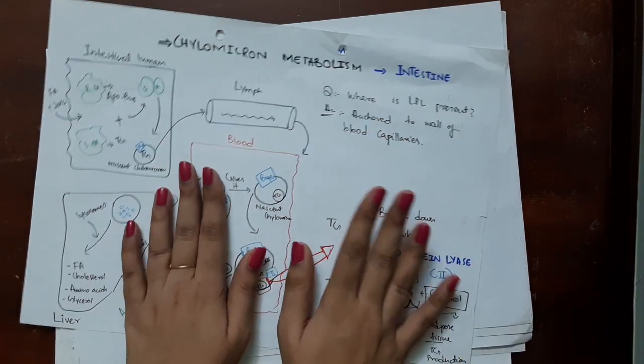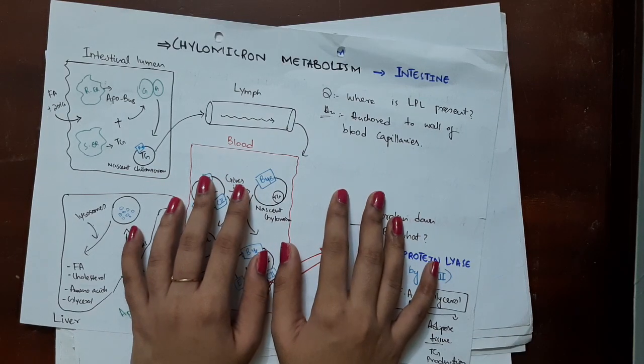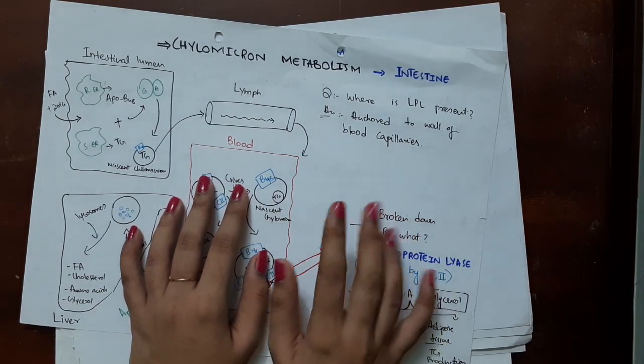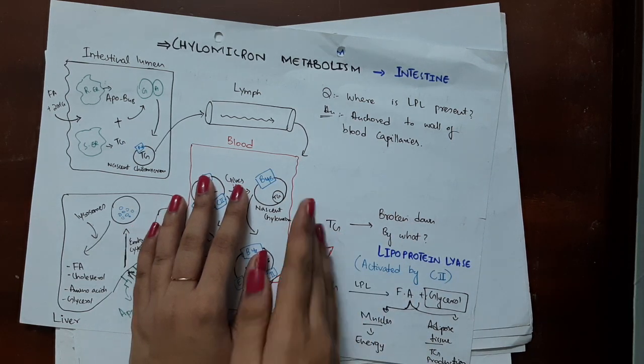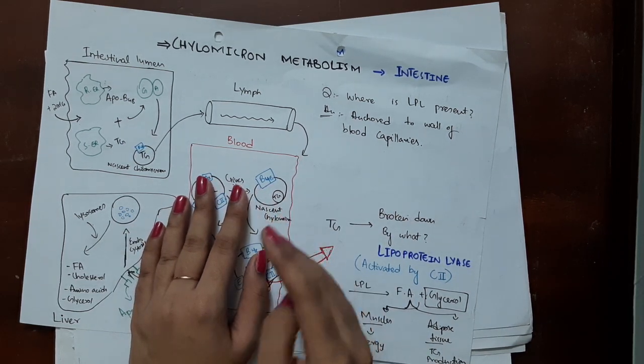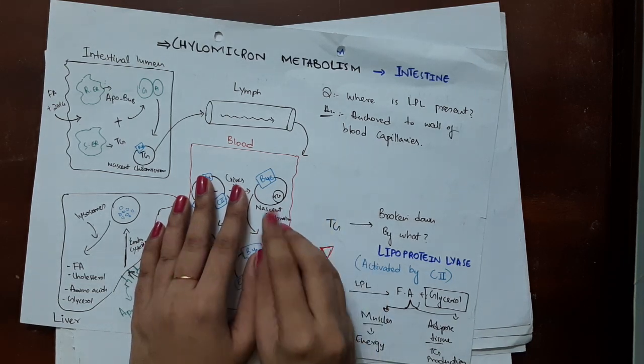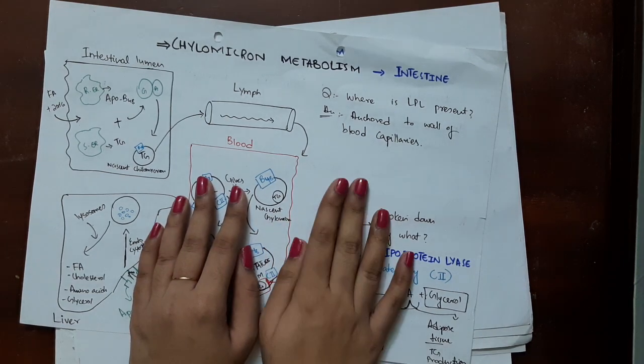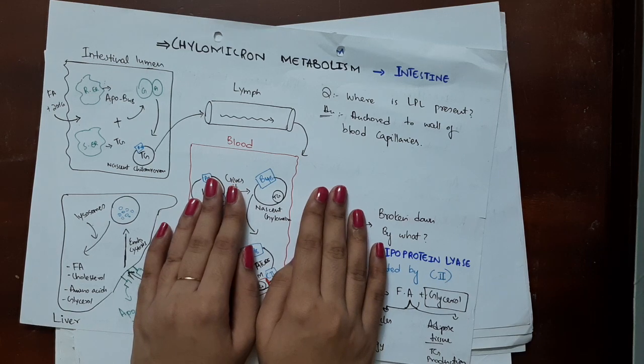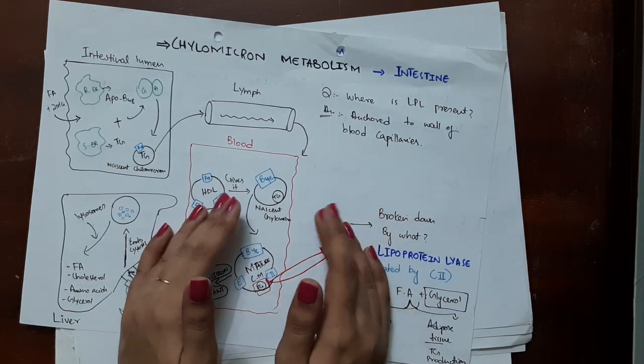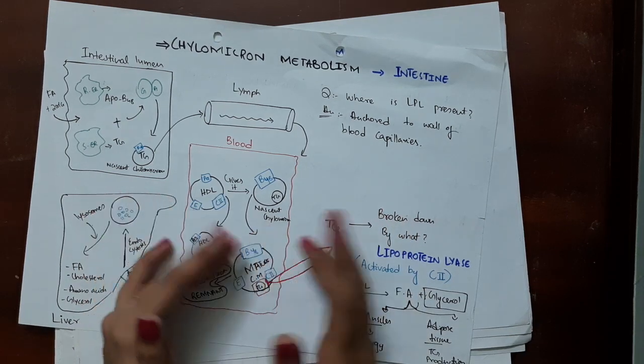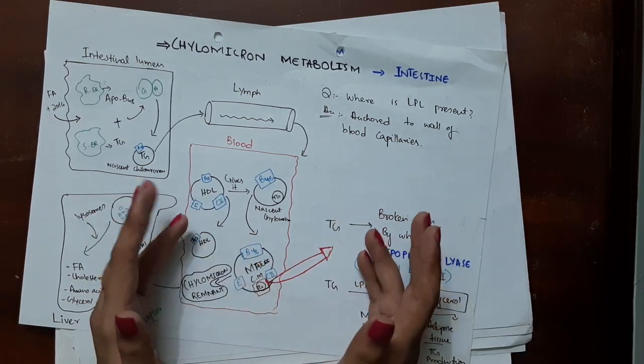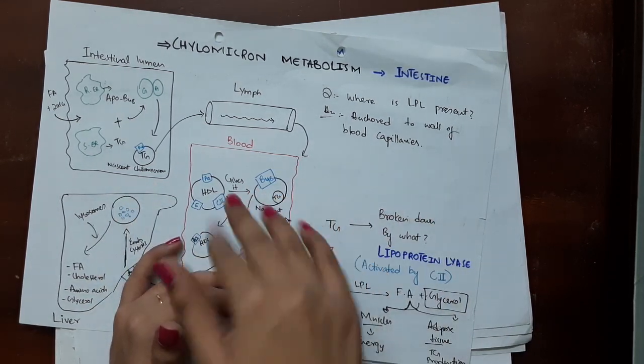Tip number five is always add clinical relevance. Every single clinical relevance that you can find for that particular topic should be right there in front of you in your notes. We study in medical school and everything that has clinical relevance will be tested way more than something that does not have clinical relevance. You have to add that clinical relevance right in your notes.